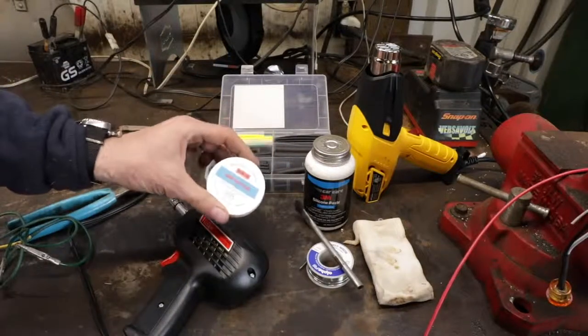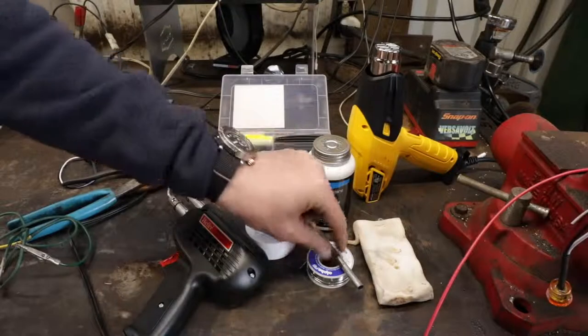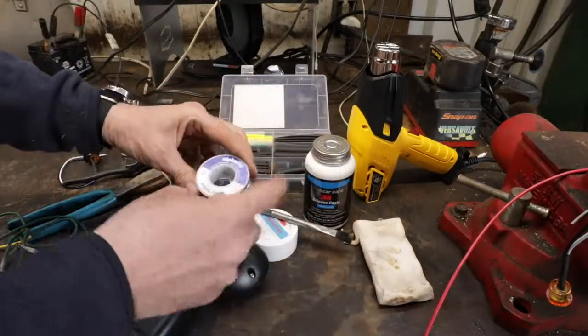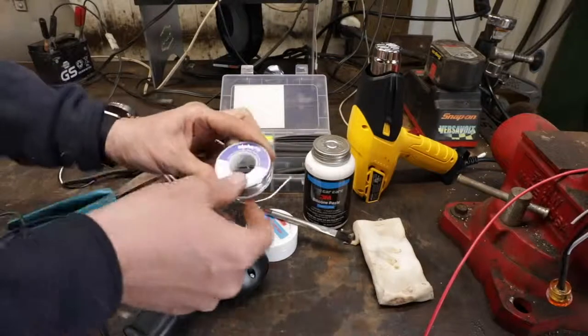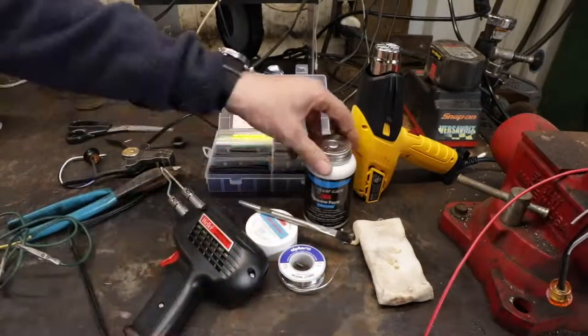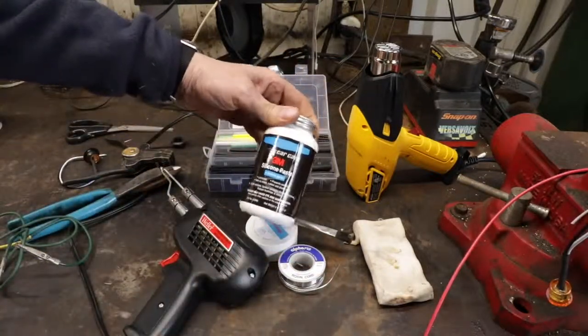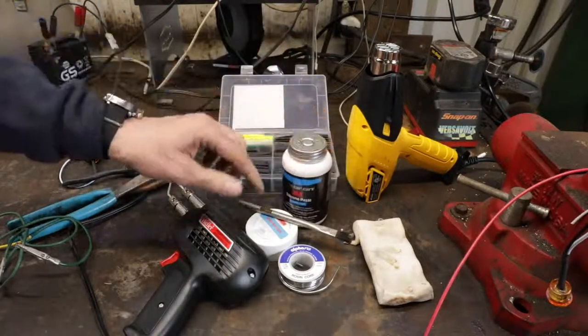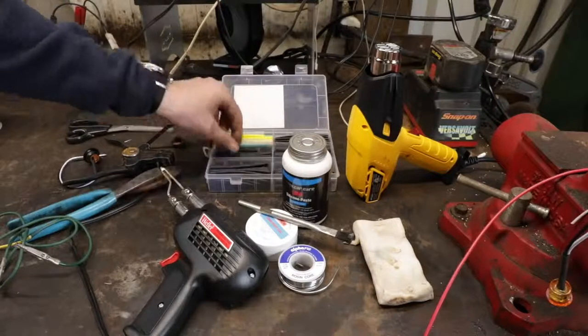You want some rosin paste flux, a little brush, and some rosin core solder. You don't want to use the solder used for plumbing. It's not the right stuff. And this right here, this stuff's amazing. This is a 3M silicone dielectric grease that we use, as well as a good selection of shrink tubing.